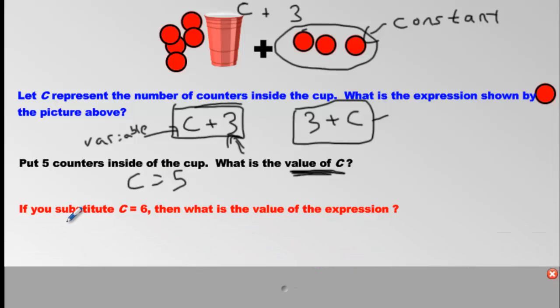How about the next part? If you substitute, C equals six. C is the mystery amount that's in the cup, and I'm telling you it's six. We've got six in there. Then what is the value of the expression? If we have six, not five, but six, six plus three is nine. Is it really that easy? Yes, it is. This is logical stuff. Six plus three is nine. That is the value of the expression.